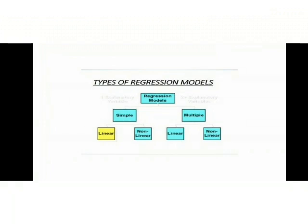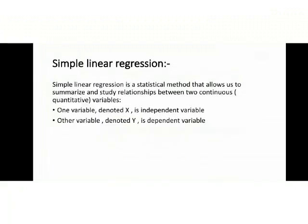Simple linear regression is the statistical method that allows us to summarize and study relationships between two continuous quantitative variables. In it, one variable is denoted by X and the other one is denoted by Y. The X variable is also called independent variable and the Y variable is also called dependent variable.